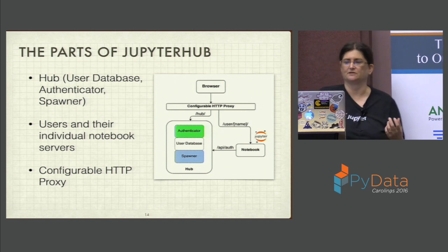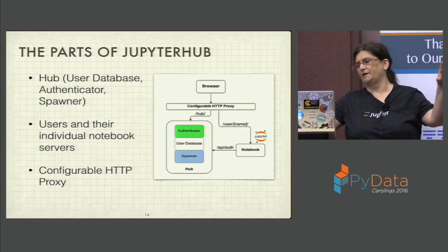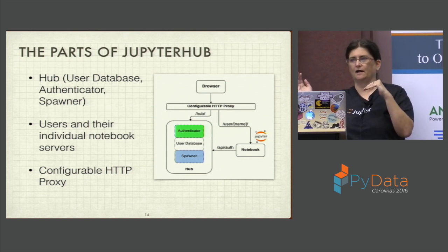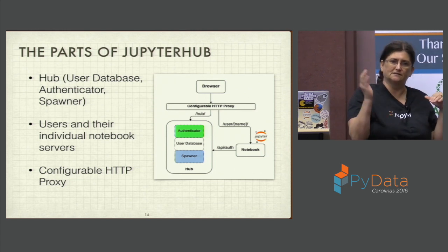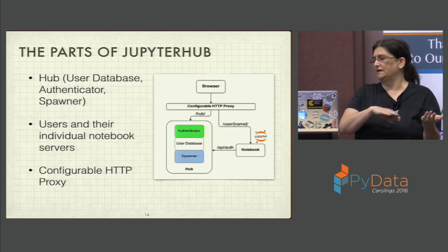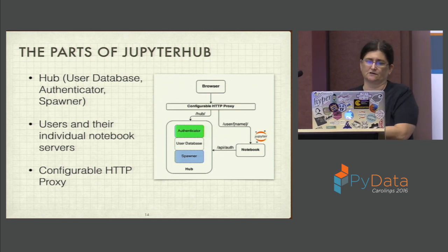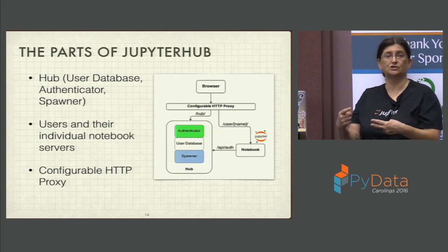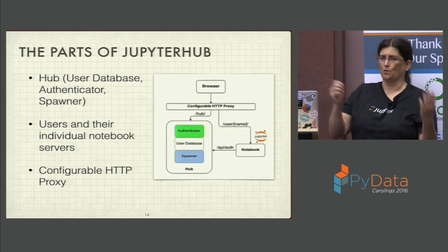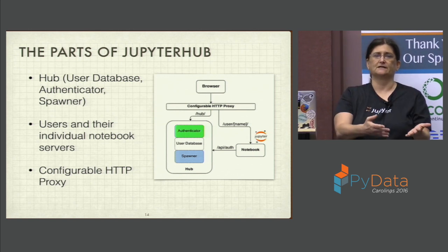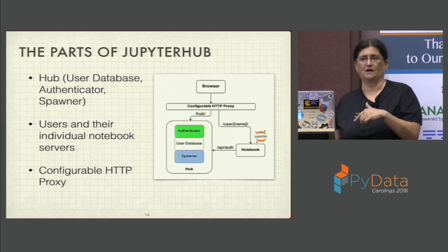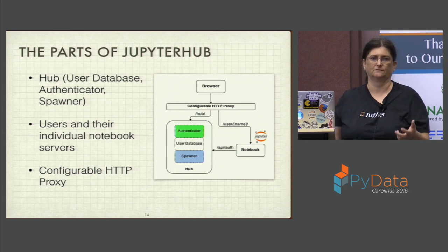The proxy's main job is to route traffic. If the URL contains '/hub', it's typically an administrative command routed directly to the Hub. If it is a user request, it's routed to the user. Depending on whether it's your first communication with a single-user notebook server or a later one, it will authenticate you with the Hub using the API, get a response, and store a cookie on your individual notebook server.